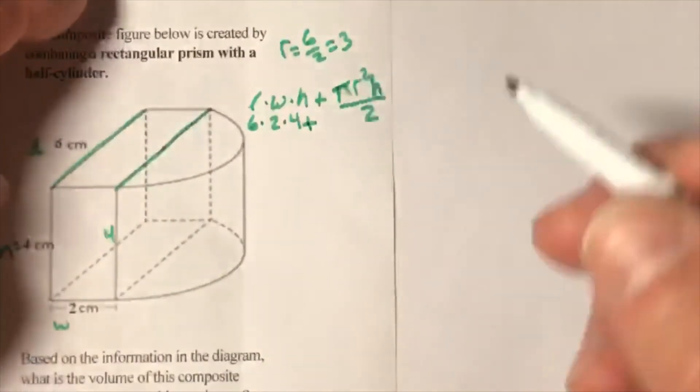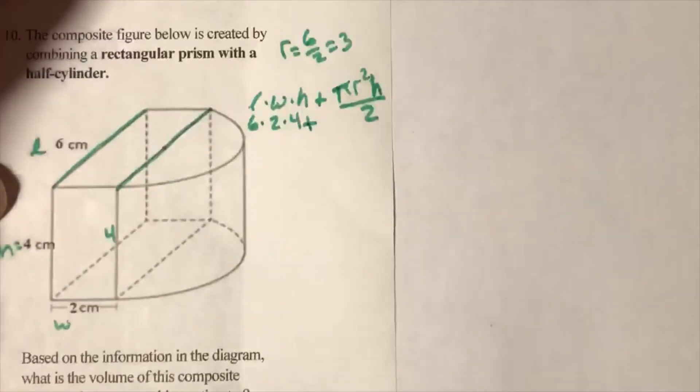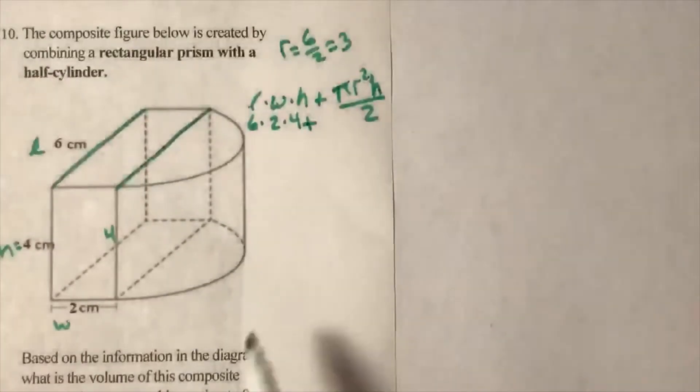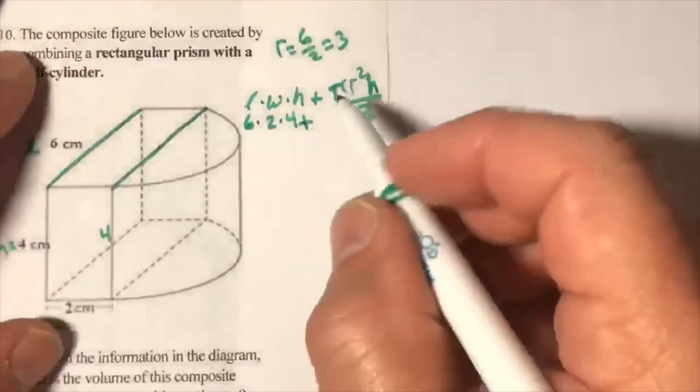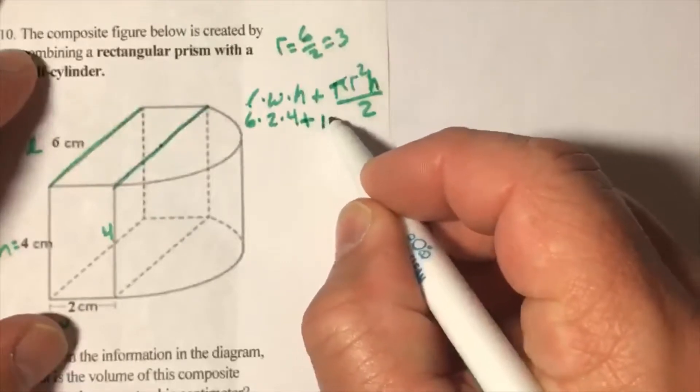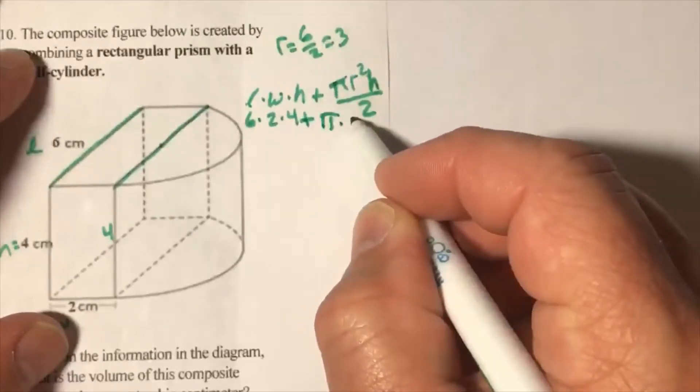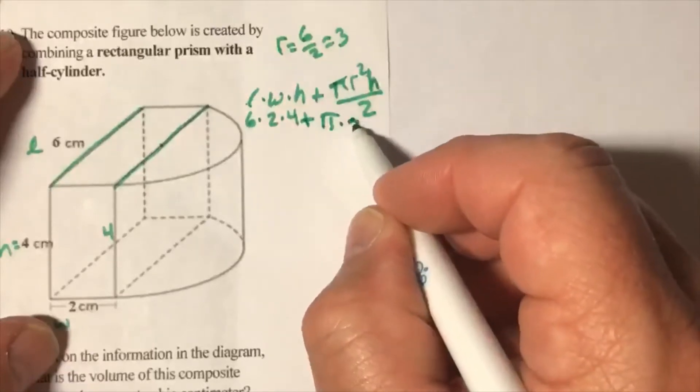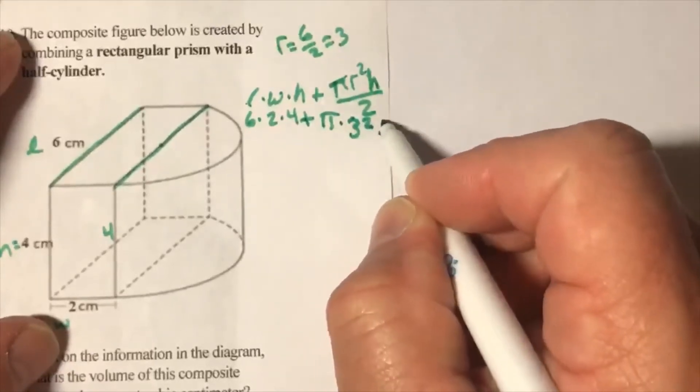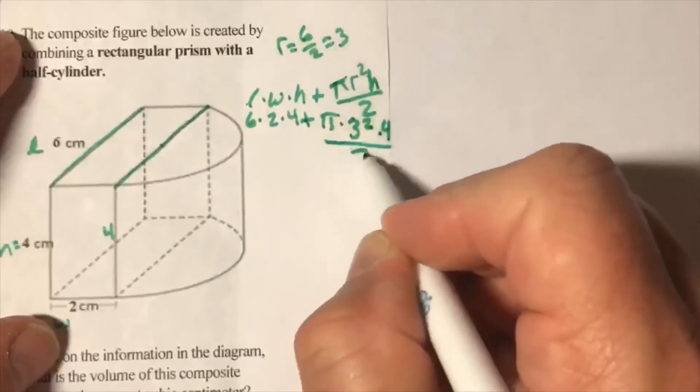Now when it comes to pi, always look to see if there's any instructions about pi. And it didn't say anything about letting pi be 3.14 or in terms of pi. So in this case, we want to use all of pi. So pi times my radius squared times 4 divided by 2.